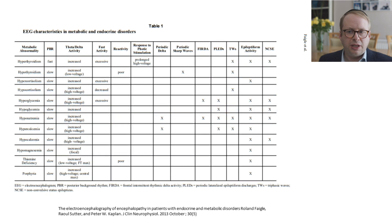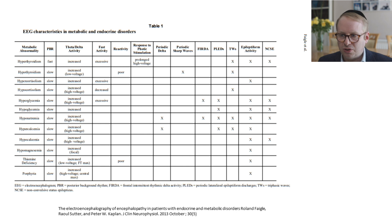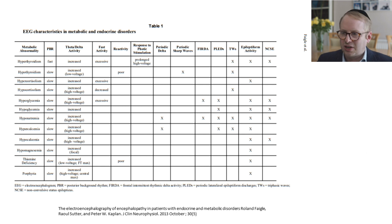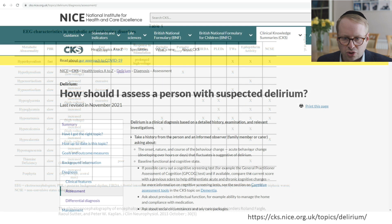In terms of the EEG characteristics of metabolic and endocrine disorders, there's a wonderful paper by Roland Fagel and colleagues. Quite simply, hyperthyroidism makes things go a little bit faster, but everything else makes things go slow. Depending on the underlying issue, various degrees of cortical irritability can manifest as PLEDs - periodic lateralised epileptiform discharges - or triphasic waves, epileptiform activity, or status epilepticus. The main ones to highlight are hyponatraemia, which is exceptionally important, and disturbances with blood sugar.